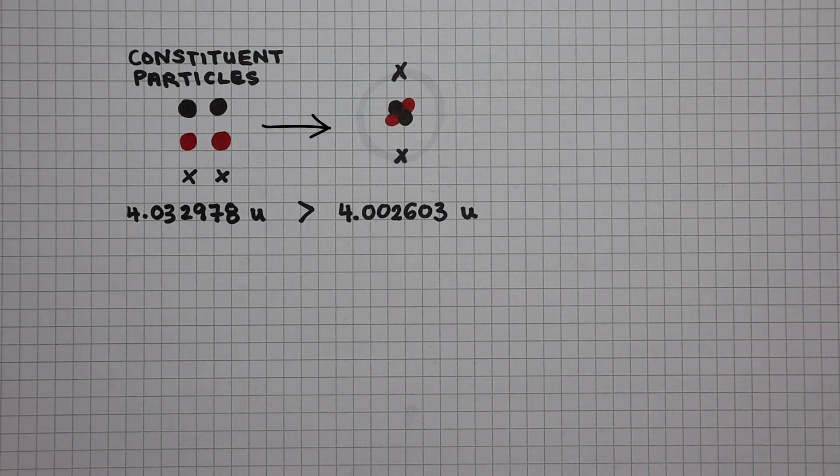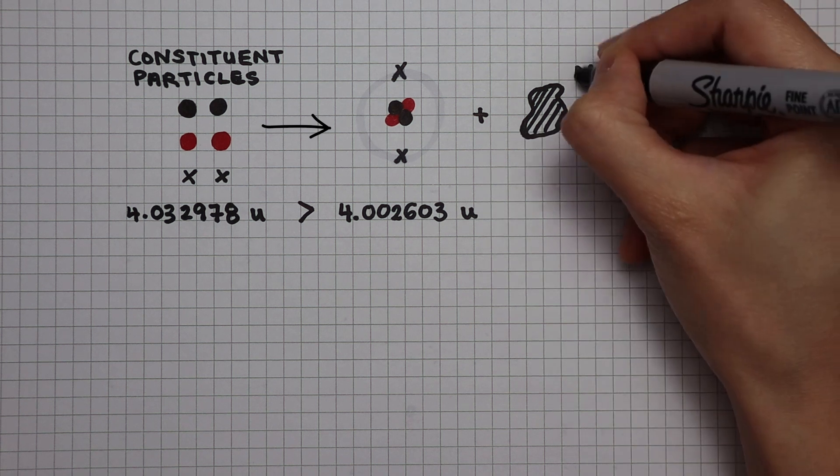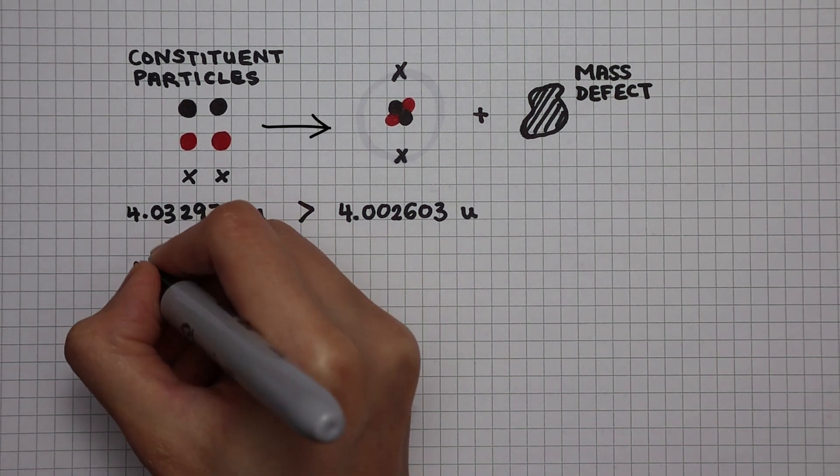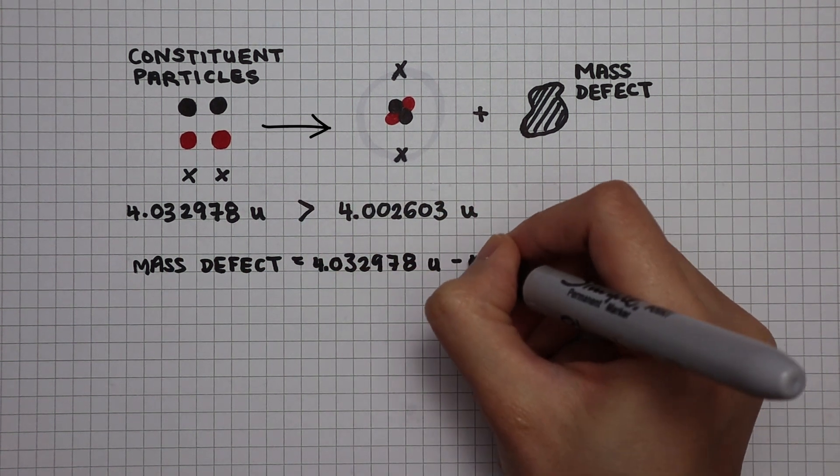This tells me something. In the process of making this atom, we have lost some mass. The difference in mass is known as the mass defect. So I can figure out exactly what the mass defect here is by doing constituent mass minus the mass of a helium atom.